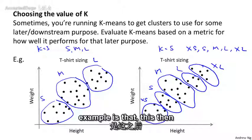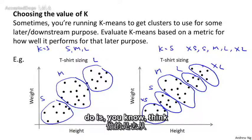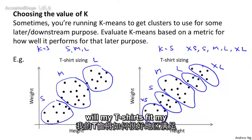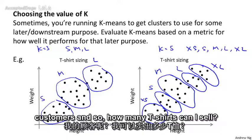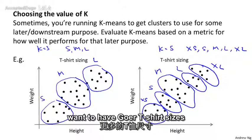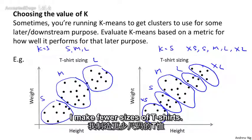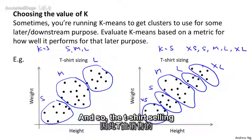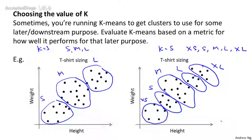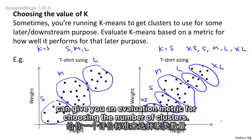This example gives us another way to choose whether we want three, four, or five clusters. You can think about it from the perspective of the t-shirt business: if I have five segments, how well will my t-shirts fit my customers, and how many can I sell? Does it make more sense to have more t-shirt sizes so they fit customers better, or fewer sizes so I can manufacture and sell them more cheaply? It's the t-shirt business considerations that give you a way to decide between three versus five clusters — that's how a downstream purpose provides an evaluation metric for choosing the number of clusters.